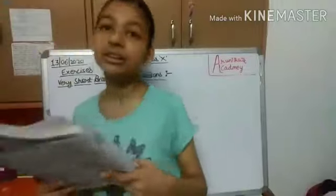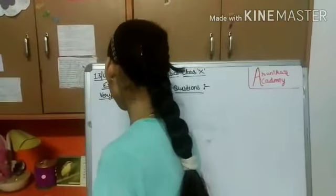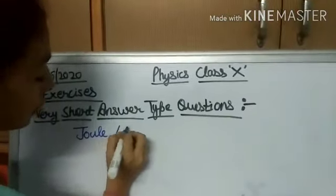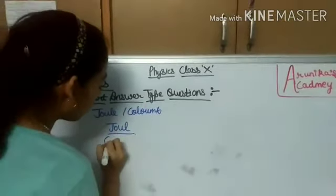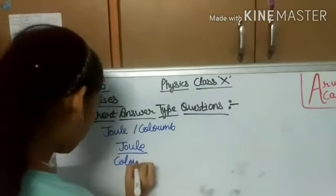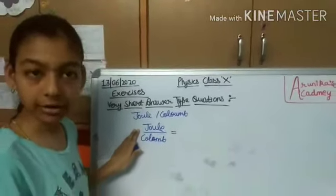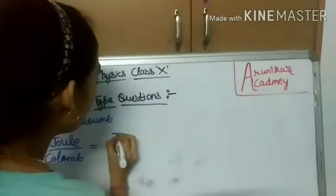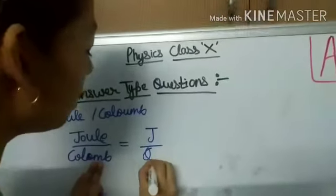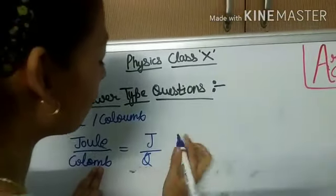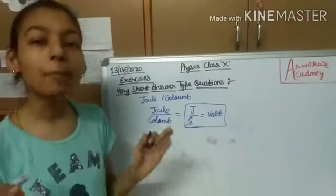So here is the very first question: by what other name is the unit Joule per Coulomb called? So as I have told you that Joule per Coulomb, we can write it as Joule upon Coulomb. So we know that Joule is the unit of work done and we denote it by J. And Coulomb is the quantity of charge which is Q. So this is volt equals to volt. So this is the formula of volt. As I have told you that 1 Joule upon 1 Coulomb equals to 1 volt.